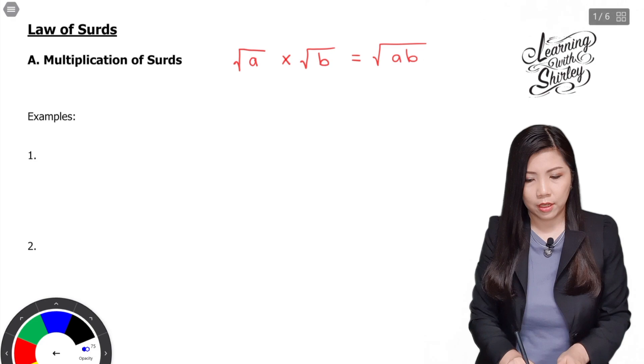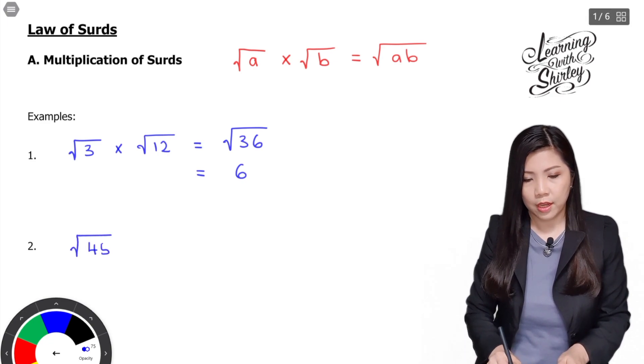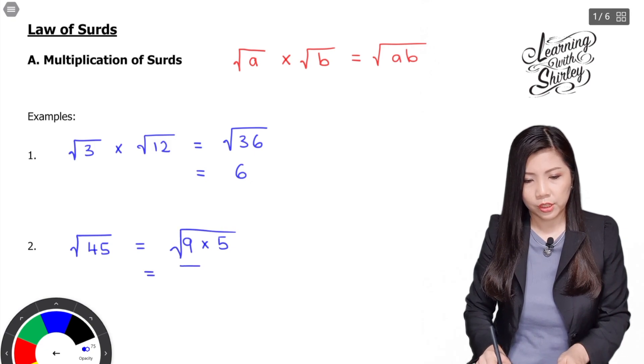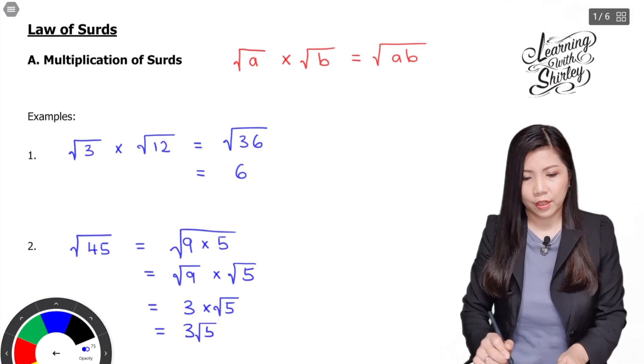So surd 3 times surd 12 is equal to surd 36, and surd 36 is 6. Next example would be surd 45 is equal to surd 9 times 5, which equals surd 9 times surd 5. You can separate them. So surd 9 is 3 times surd 5, and is equal to 3 surd 5. So that's the answer.